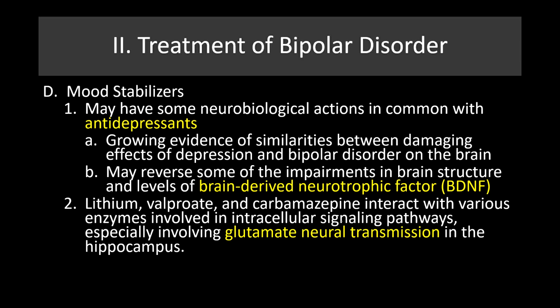When treating this disorder, we're usually talking about a mood stabilizer — trying to stabilize mood so it doesn't cycle rapidly. These may have neurobiological actions in common with antidepressants. There's growing evidence of similarities between the damaging effects of depression and bipolar disorder in the brain. The goal may be to reverse impairments in brain structure and levels of BDNF. Lifestyle interventions such as exercise, diet, and increases in omega-3 fatty acids may help along the way.